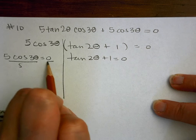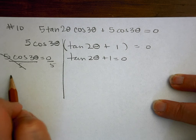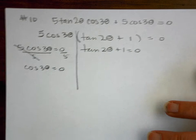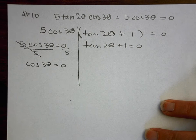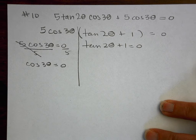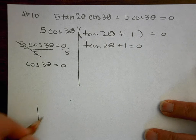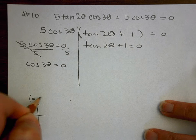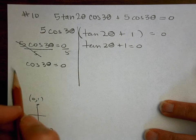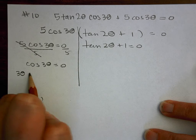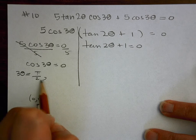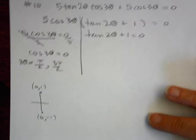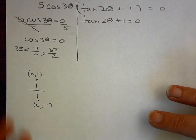So I'll divide both sides by 5. And so I want to know where cosine is equal to 0, and it is an x value. So where the x values are 0 are on the quadrantals here and here. Okay, over 0, up 1, over 0, down 1. So then that would be at pi over 2 and then again at 3 pi over 2.